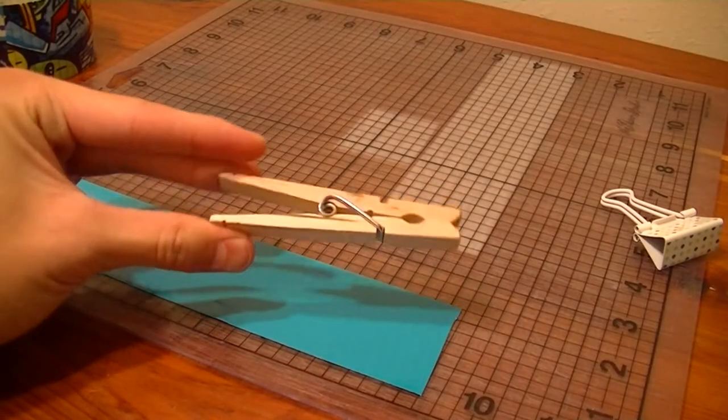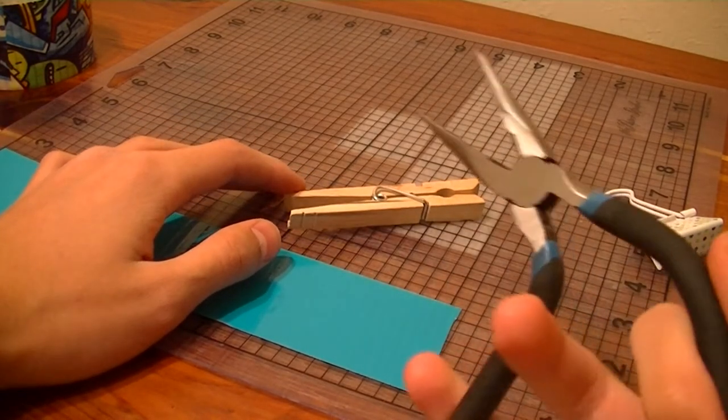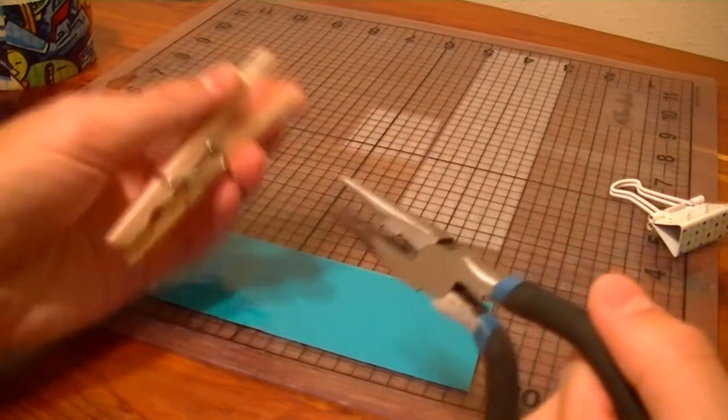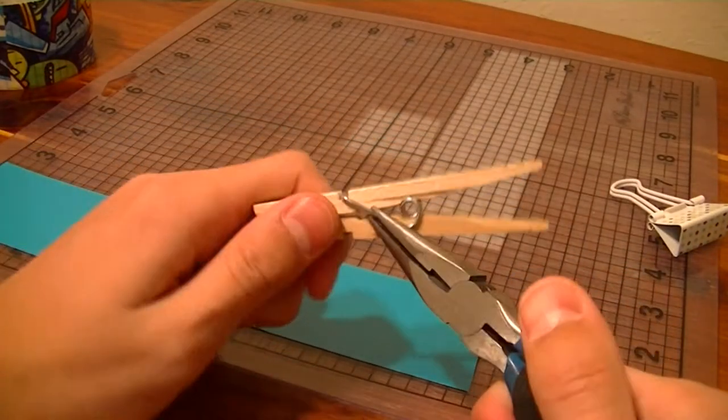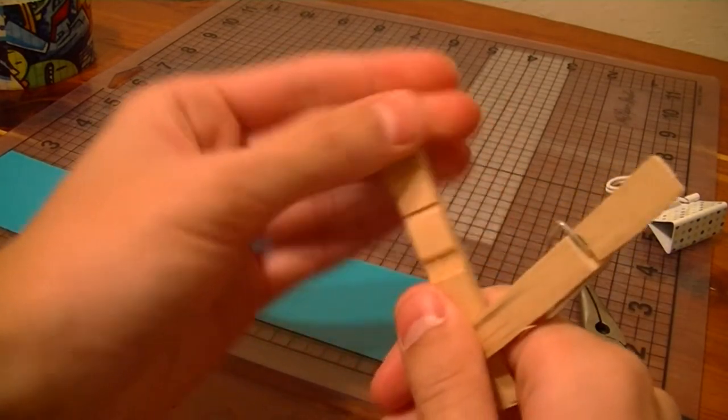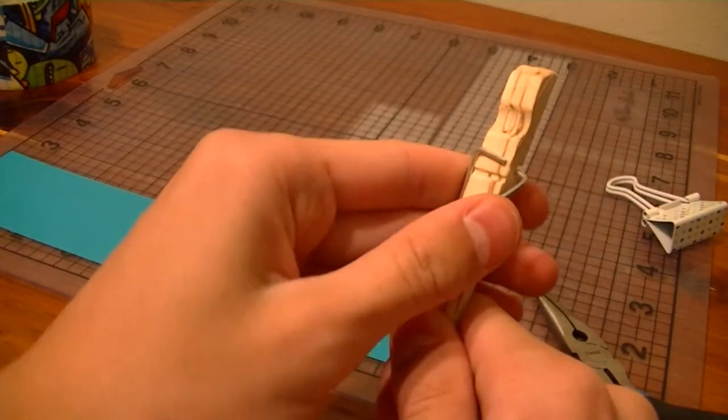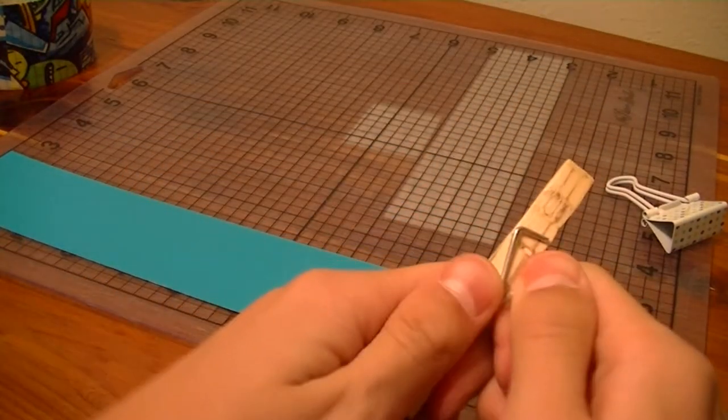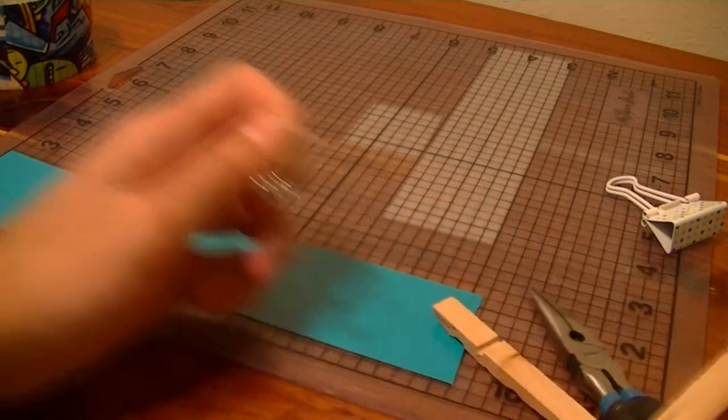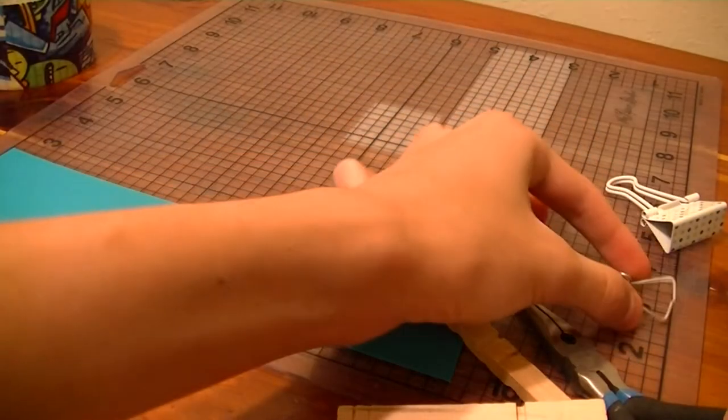I'm gonna start with the clothespin first. I also forgot to mention a pair of pliers come in handy. If you don't have any, it's okay. You could do it without them too. Right here would be awesome if you could just use your pliers and pull it out. But if you can't, it's okay. Just be really careful because it likes to snap out at you. So you're gonna need this piece. Set that aside.